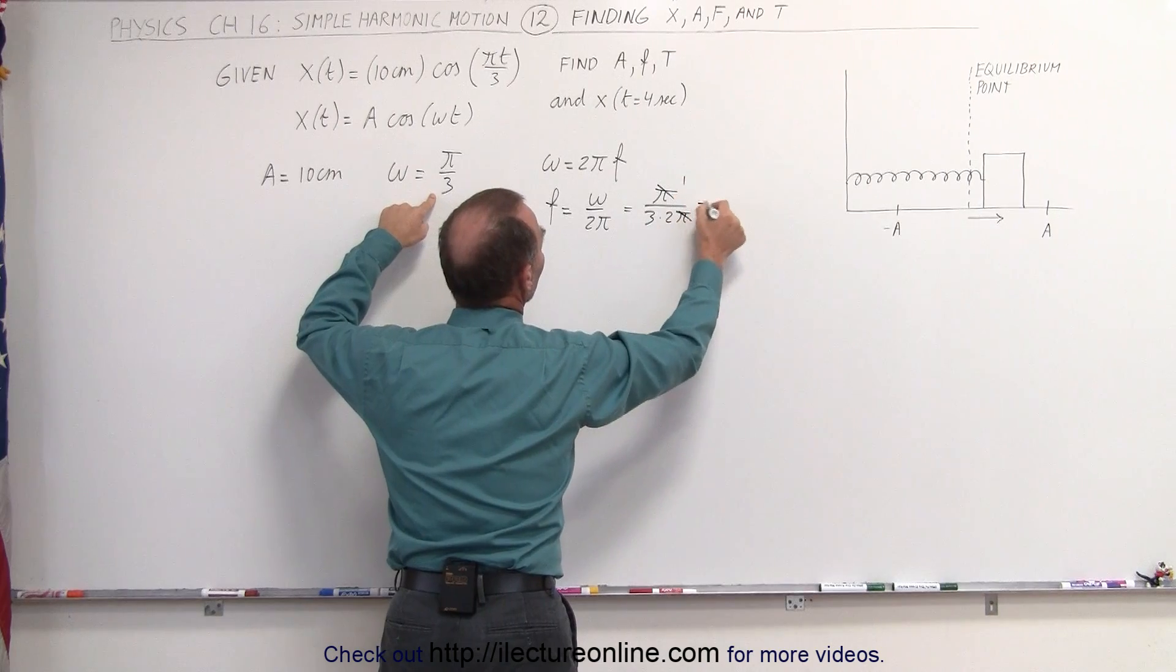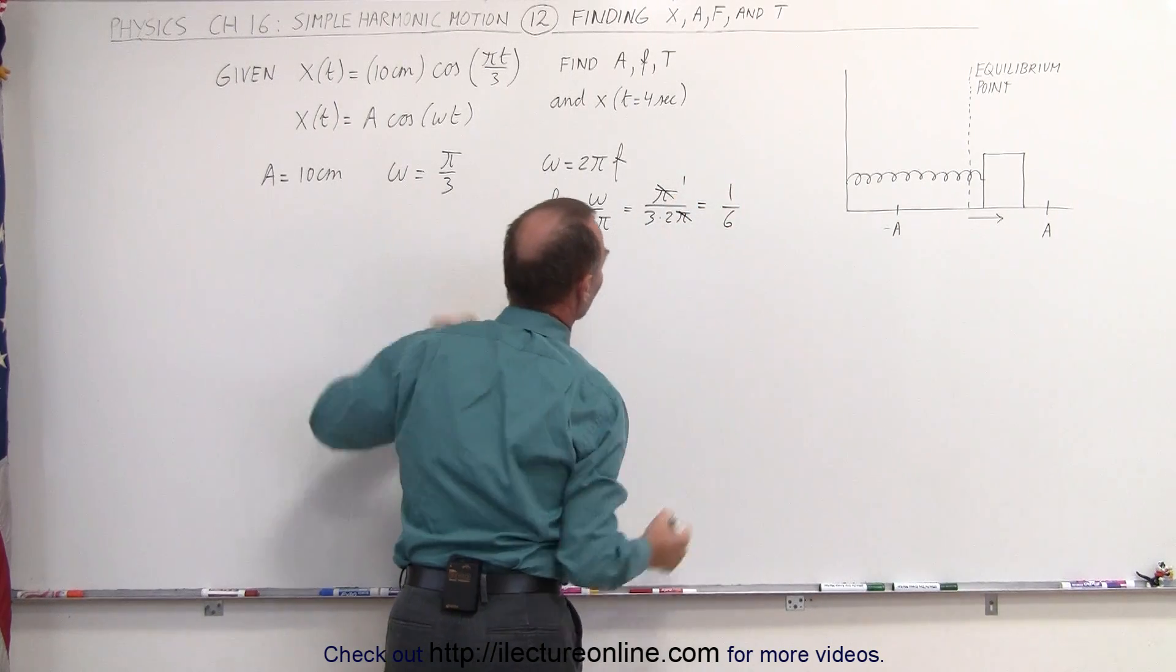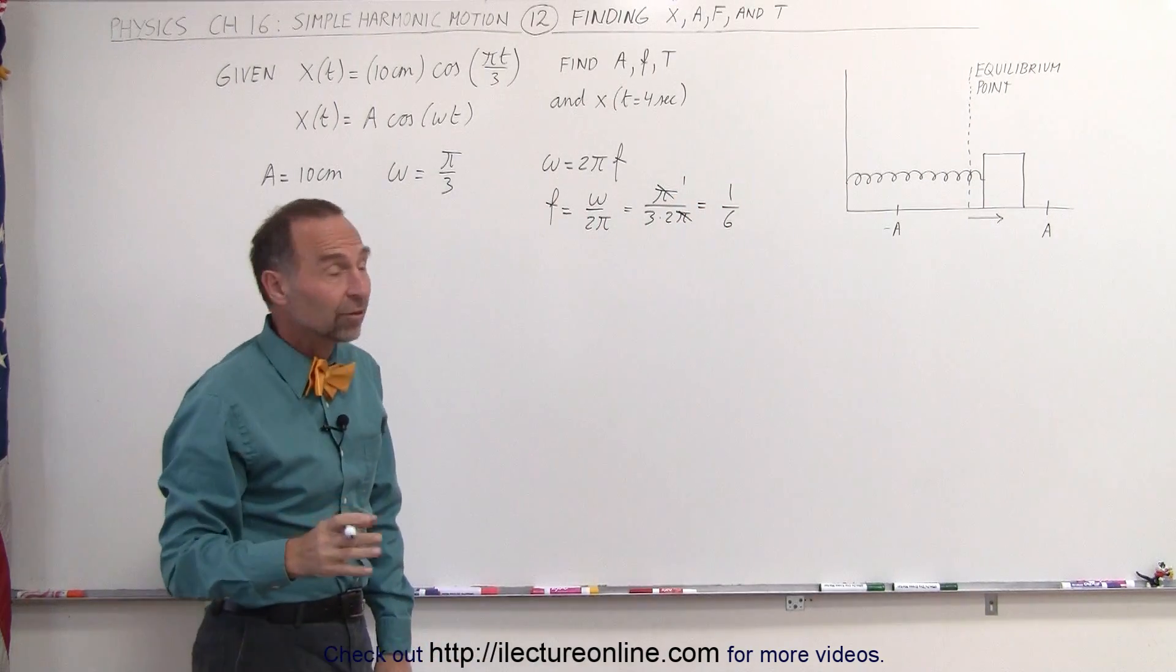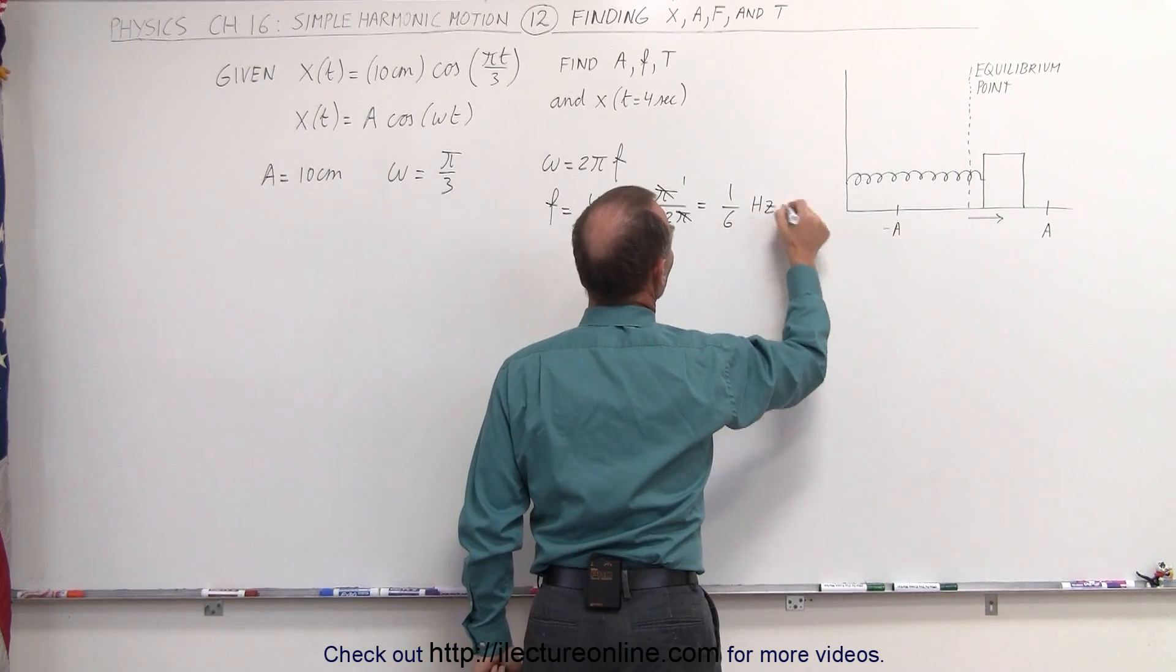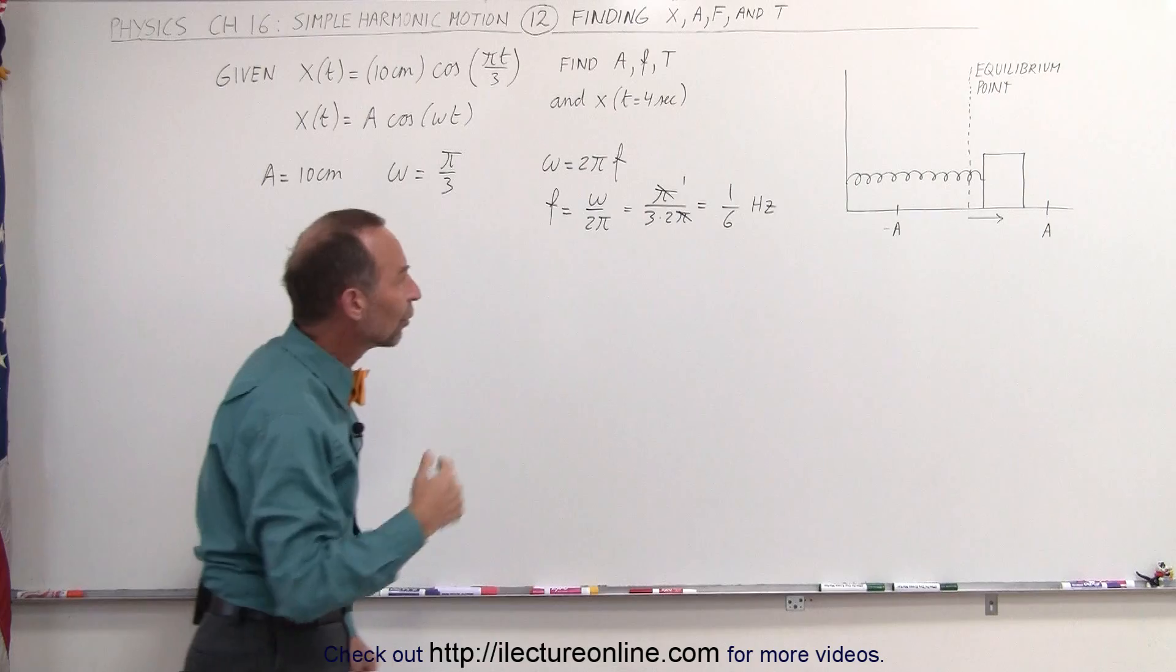The pi's cancel out and we end up with 1 divided by 6. Now the units for frequency is oscillations per second, so it's hertz, oscillations per second are hertz, or 1 over second.